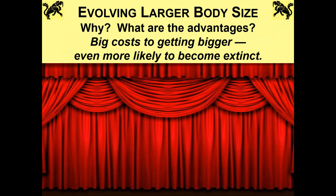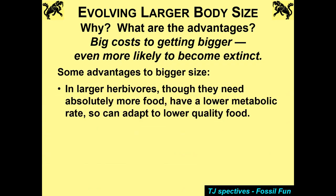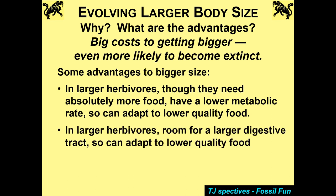So, evolving a larger body size — why? What are the advantages? There's a big cost to getting bigger: you have to eat a lot more food, you're easier to find, and you may have trouble hiding from predators. A lot of things are bad about being big — you're more likely to become extinct, though some argue that's not true. But in larger herbivores, though they need absolutely more food, you have a lower metabolic rate the larger you are. If you're bigger, you can adapt to lower-quality vegetation. Larger herbivores have room for a larger digestive tract — that's often a major selective force. You need to be bigger to hold a larger digestive tract to process lower-quality food. It takes more time to digest lower-quality food, but you get more nutrients, particularly if you have a large fermentation chamber — the hindgut of a horse or the foregut of a cow.